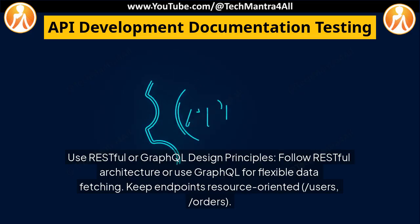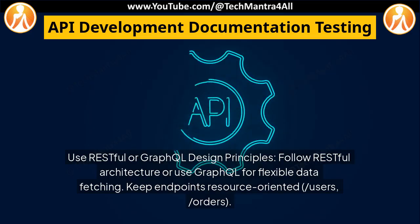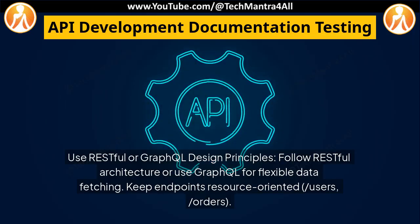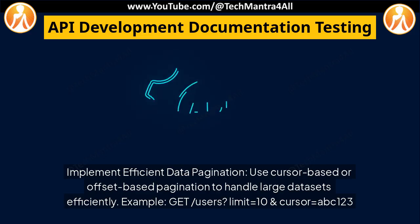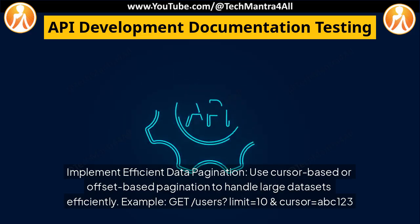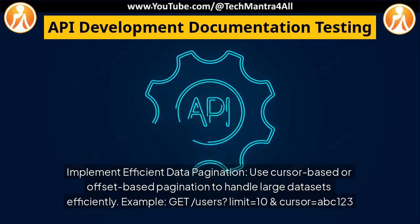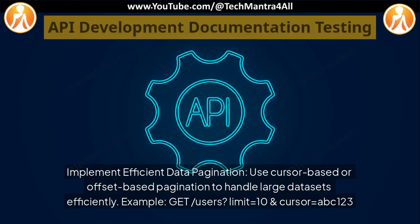Use RESTful or GraphQL design principles: follow RESTful architecture or use GraphQL for flexible data fetching. Keep endpoints resource-oriented, such as /users and /orders. Implement efficient data pagination: use cursor-based or offset-based pagination to handle large datasets efficiently. For example, GET /users?limit=10&cursor=abc123.